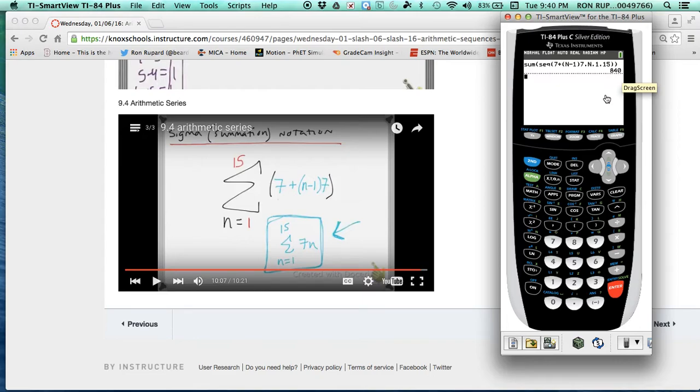And now for the easy way. Much easier. If you hit alpha button window, and that is there, you just go down to that option, hit enter. Now you'll be able to plug it in exactly how you see it. So alpha N goes over to here. Hit 1. Move up. Hit 15. Move over. And put in your explicit formula, 7 plus parentheses, N minus 1, parentheses, times 7. Hit enter. You can see it's 840 as well.